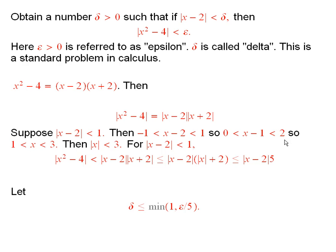Now, what does that imply? Well, if I add 1 to here, here, and here, it implies that 1 is less than x less than 3. And so I can conclude that the absolute value of x is less than 3.